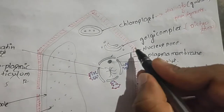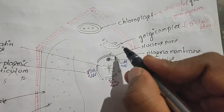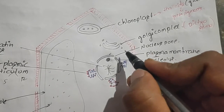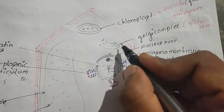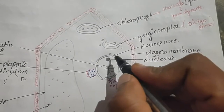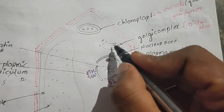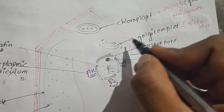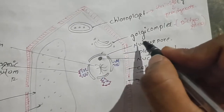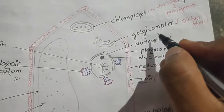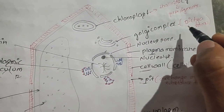The next organelle is the Golgi complex. Compared to animal cells, more Golgi complexes are present in plant cells. The Golgi complex is slightly away from the nucleus, but its convex side faces the plasma membrane. In plant cells, the Golgi complex is also known as the dictyosome.